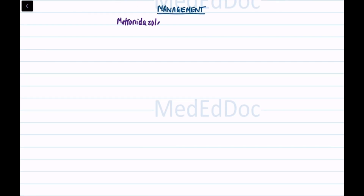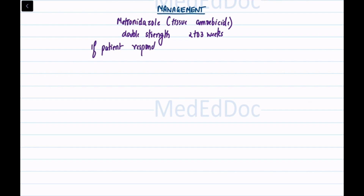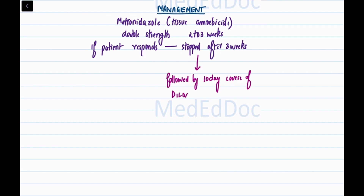Management: Treatment involves the use of metronidazole, a tissue amoebicide, given at double strength for 2–3 weeks. If the patient responds to metronidazole, it is stopped after 3 weeks, and a 10-day course of diloxanide furoate, a luminal amoebicide, is given.